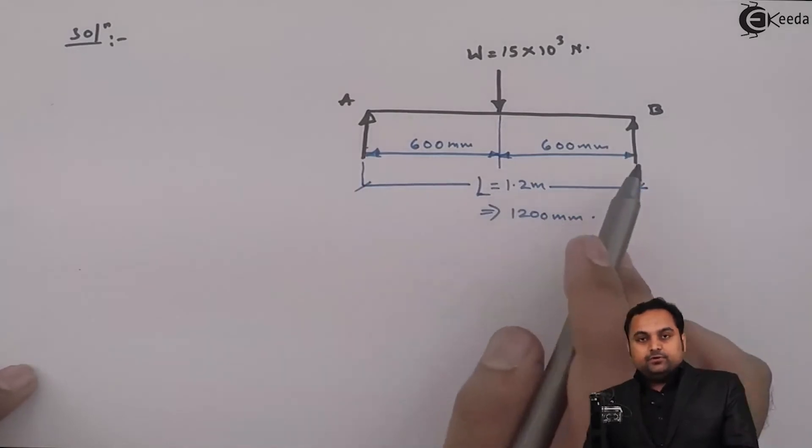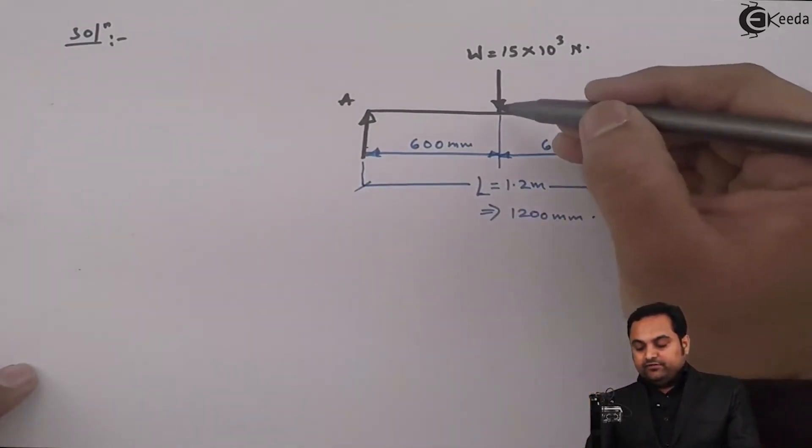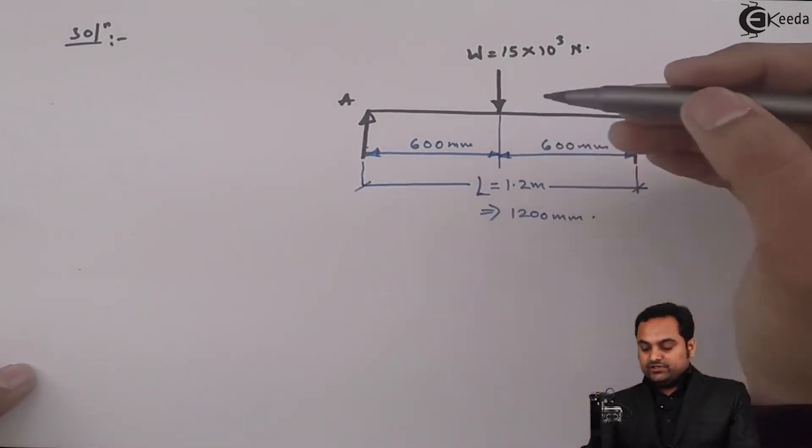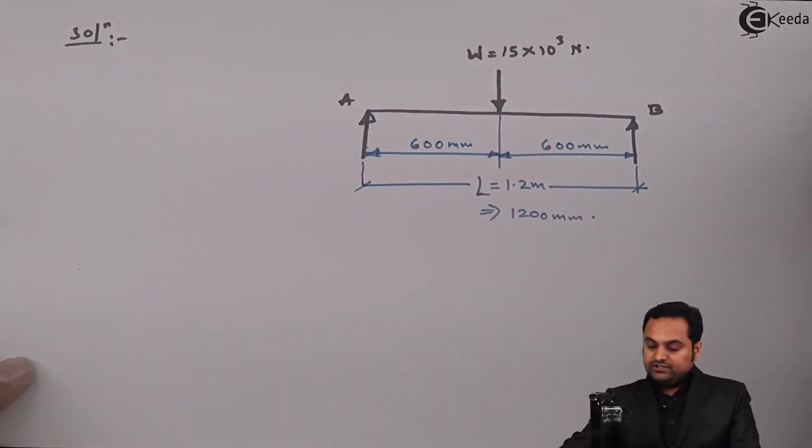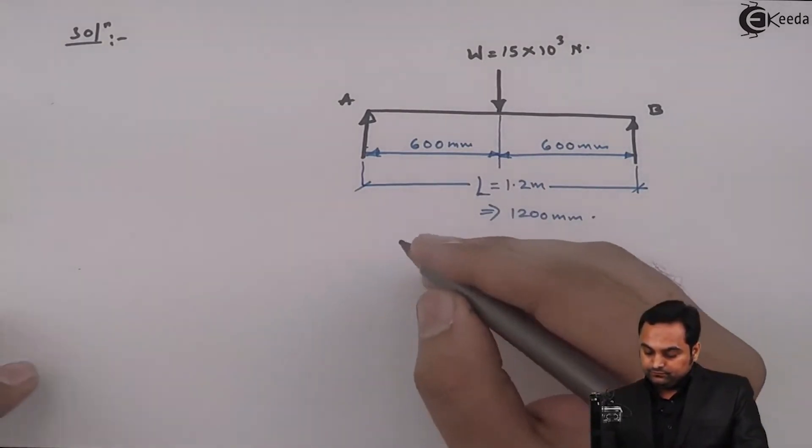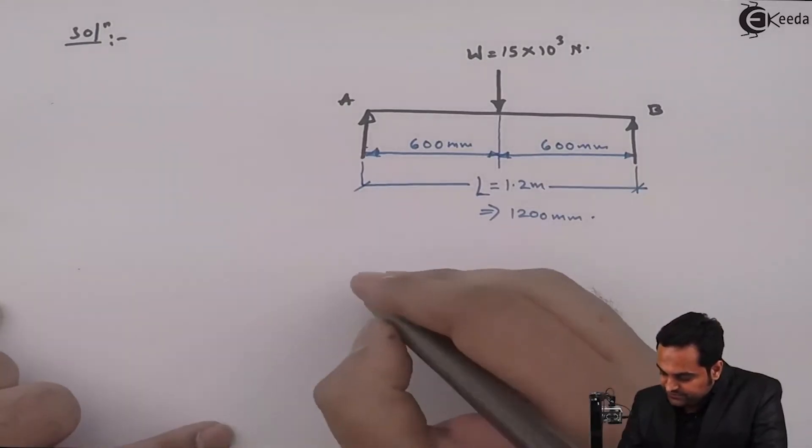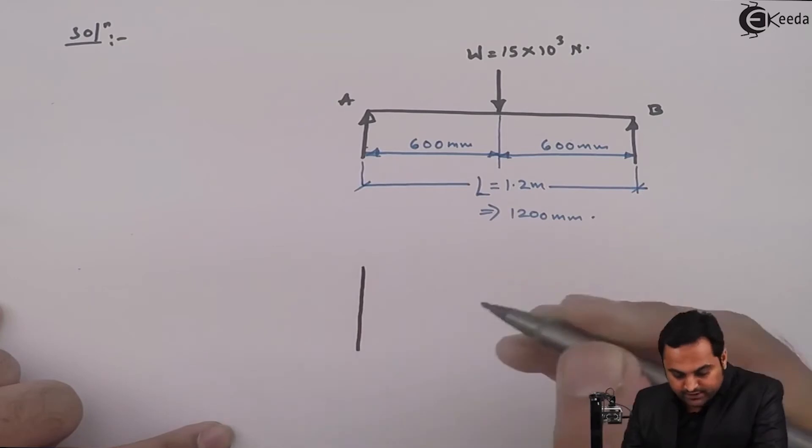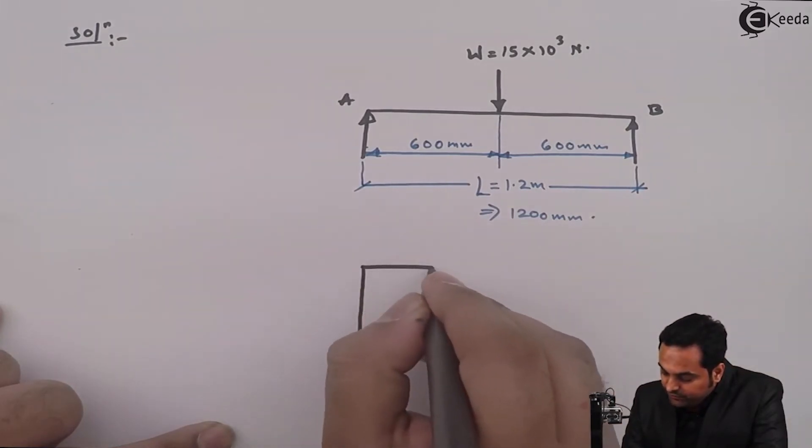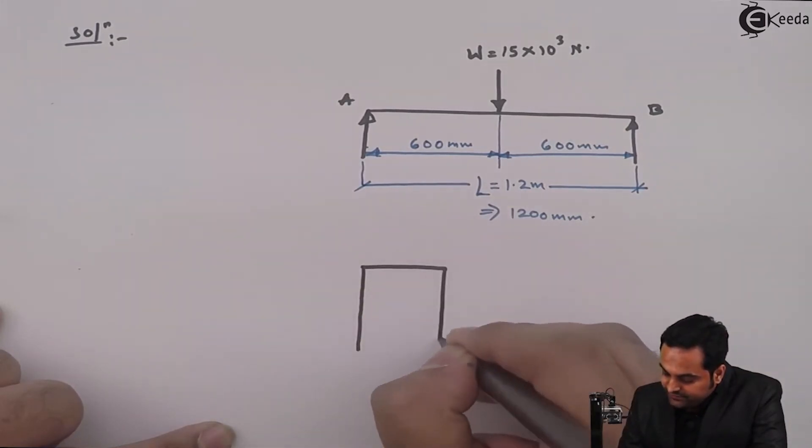Next, for this simply supported beam we have to find the deflection at the center, that is the question. And even the cross section is given, the cross section of this simply supported beam is rectangular having width B is 40 and depth is 80mm.